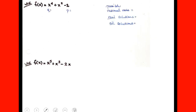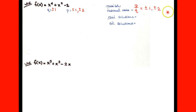Let's look at another one: x to the fourth plus x squared minus 2. p is going to be the factors of our constant, which is negative 2: plus or minus 1 and plus or minus 2. q is going to be the factors of our leading coefficient, which is 1: only plus or minus 1. Putting p over q gives us plus or minus 1 and plus or minus 2. There are 4 possibilities for this degree-4 polynomial.